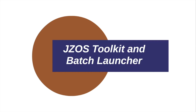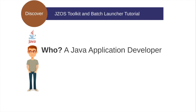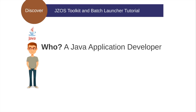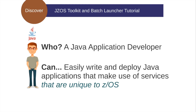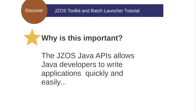The JSOS Toolkit and Batch Launcher was created for Java application developers so that they can easily write and deploy Java applications that make use of services that are unique to z/OS. So why is this important? We are providing a set of helper classes called the JSOS Toolkit. This API toolkit helps Java developers make use of unique mainframe services right inside their Java applications.